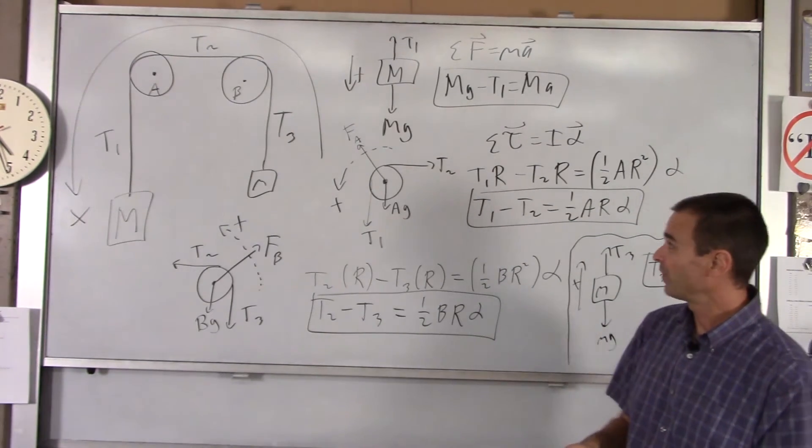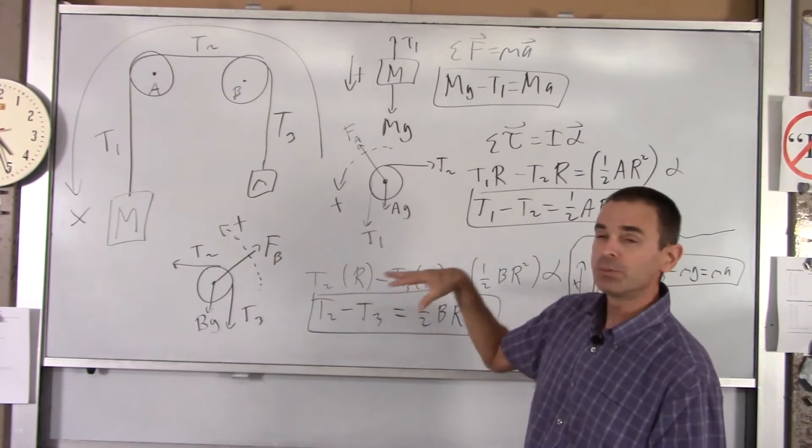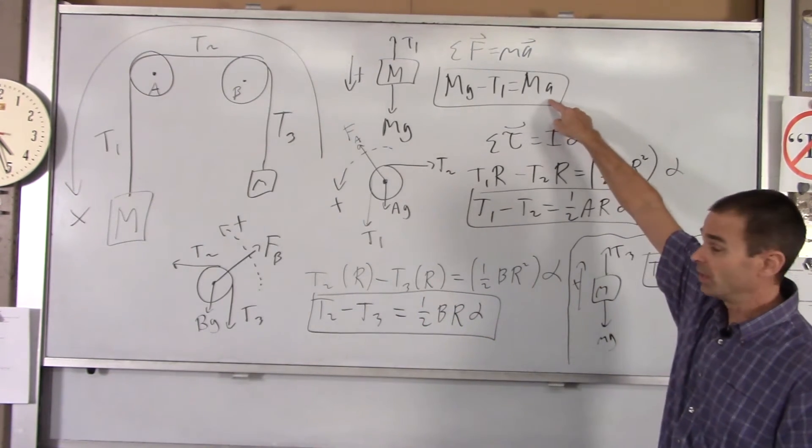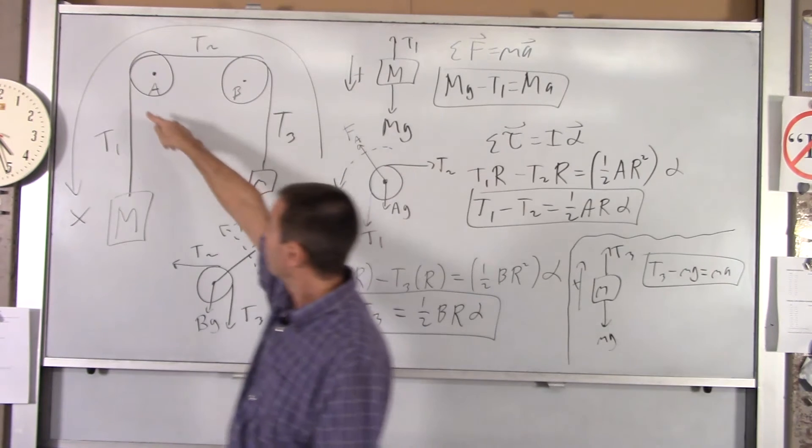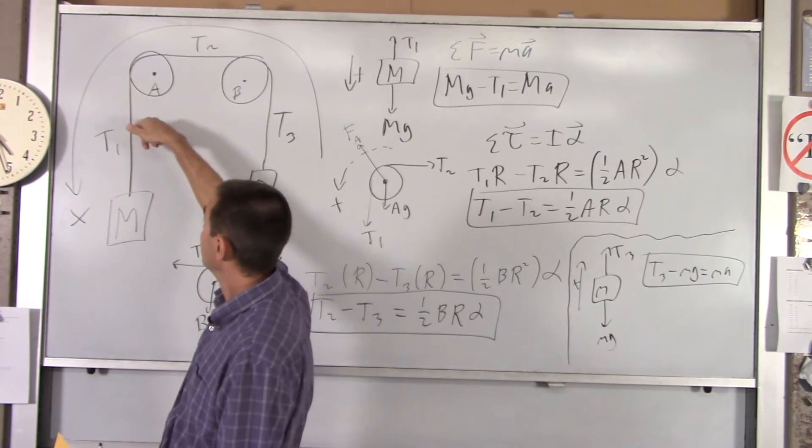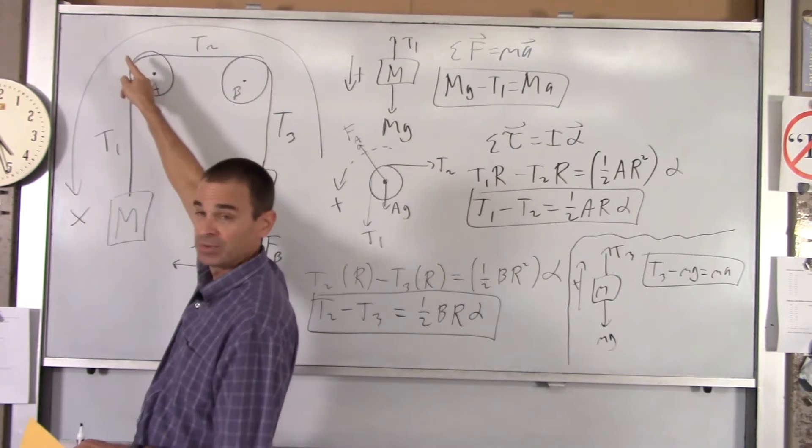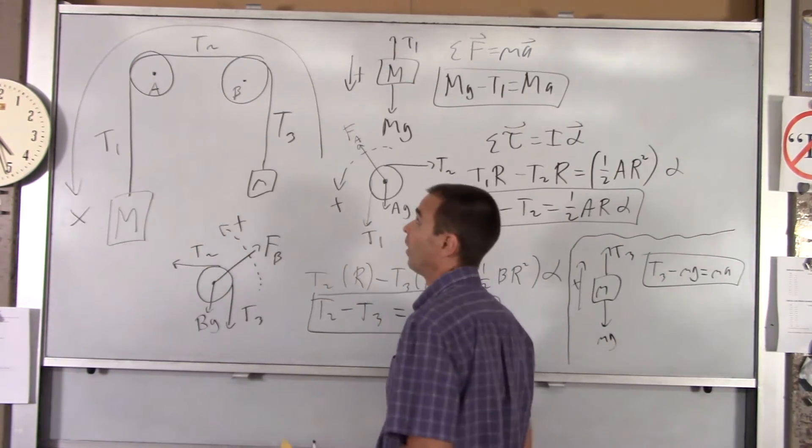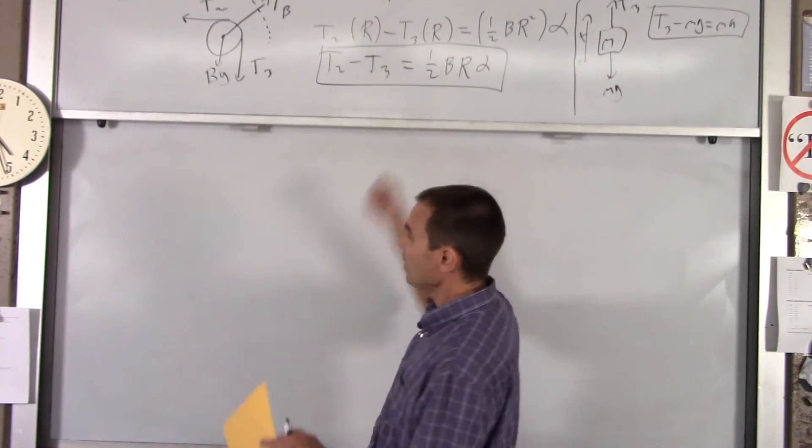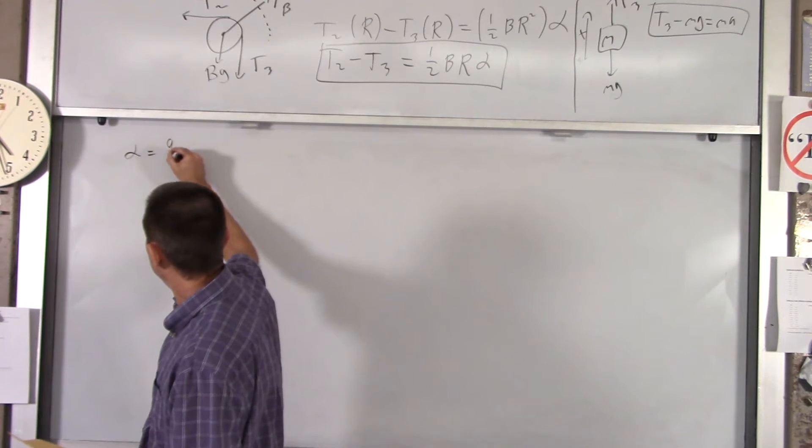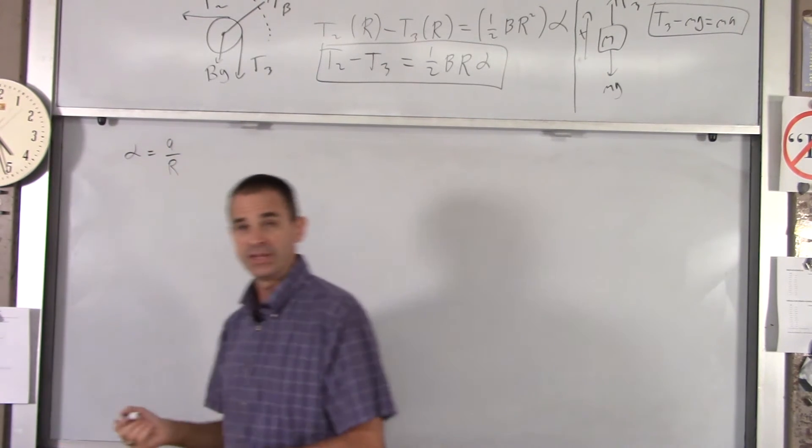The last equation, hopefully you know this. How do we relate alpha to A? Well, the linear acceleration of the masses or the string is going to be alpha times R because they're attached to the edge of the disk. So our fifth equation is alpha equals A over R for each disk.